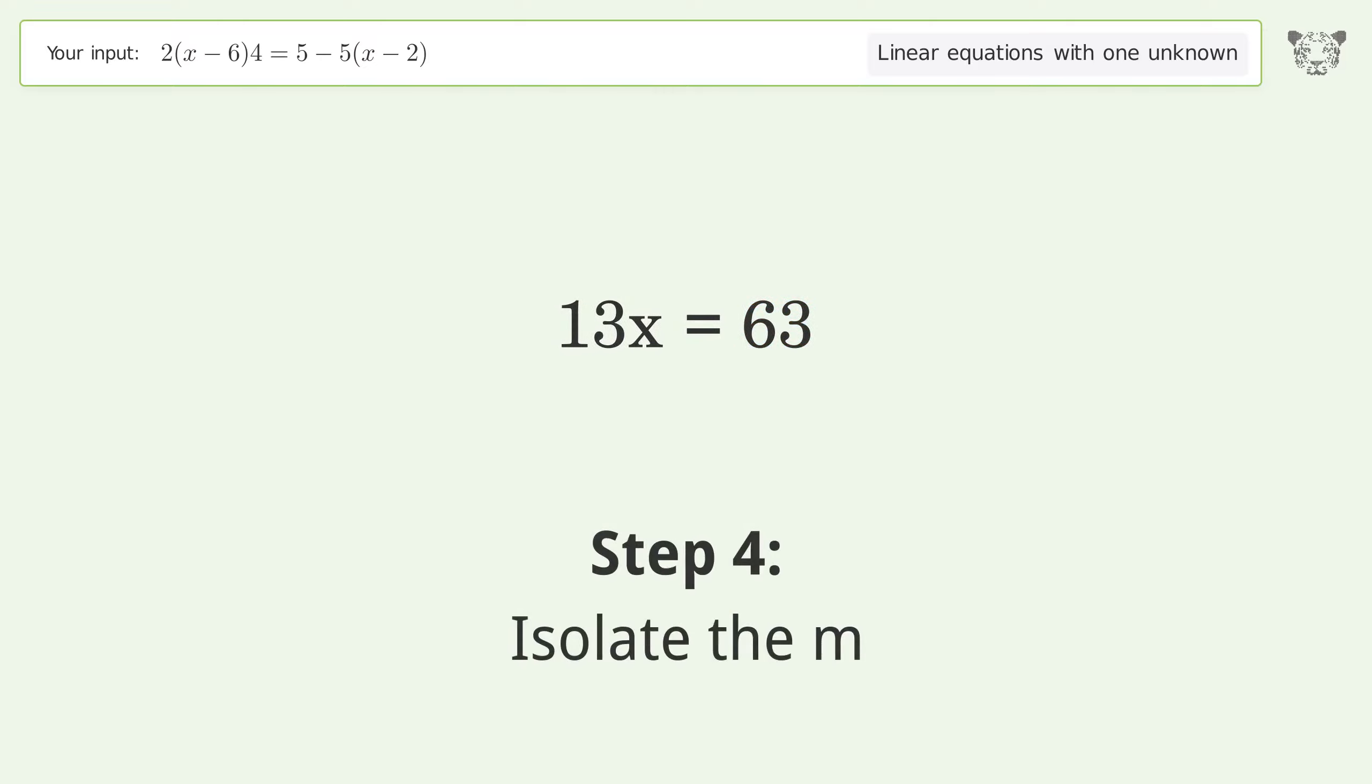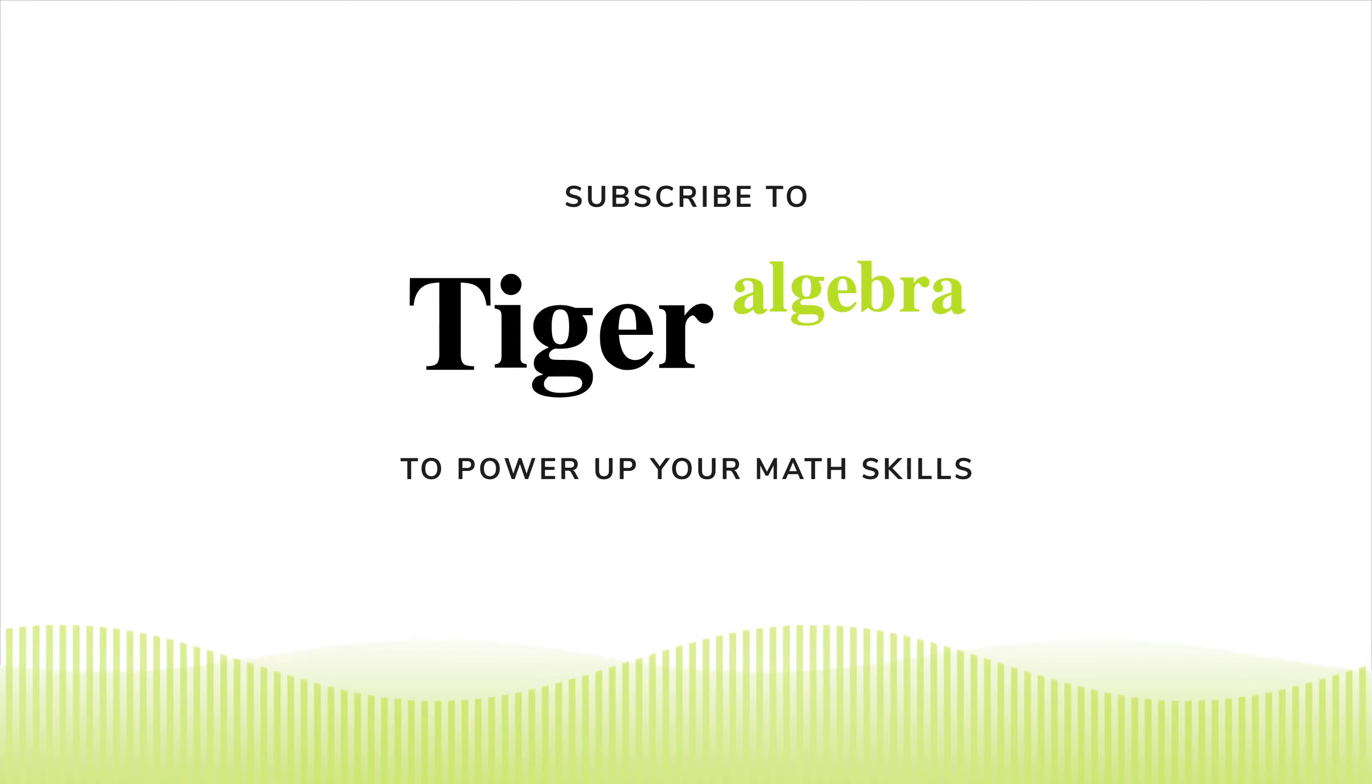Add 5x to both sides. On the left side of the equation, simplify the fraction. And so the final result is x equals 63 over 13.